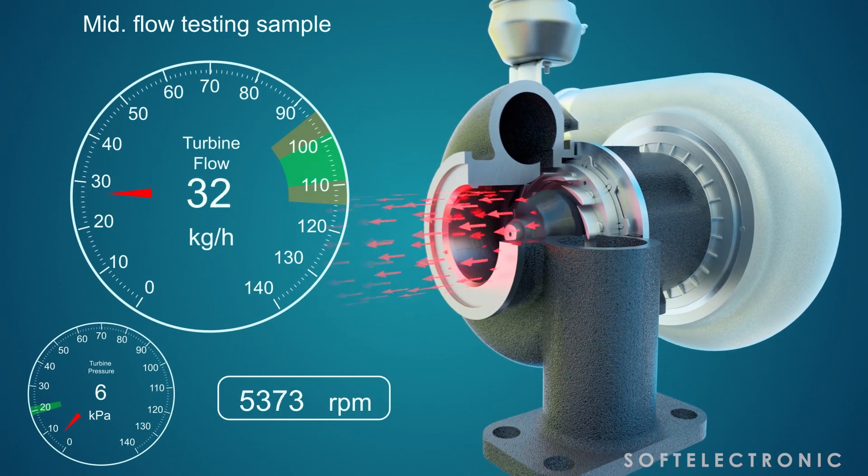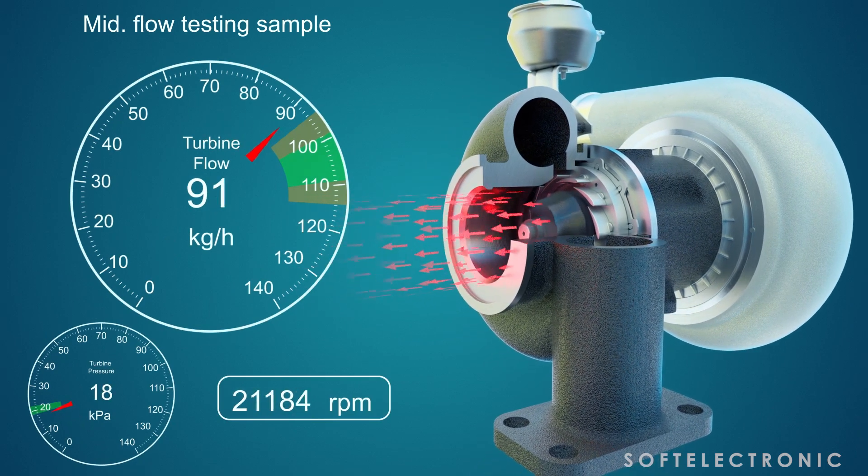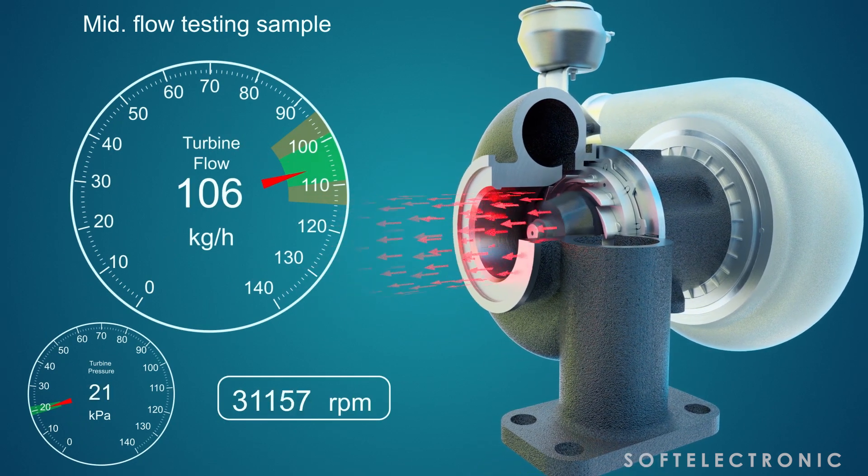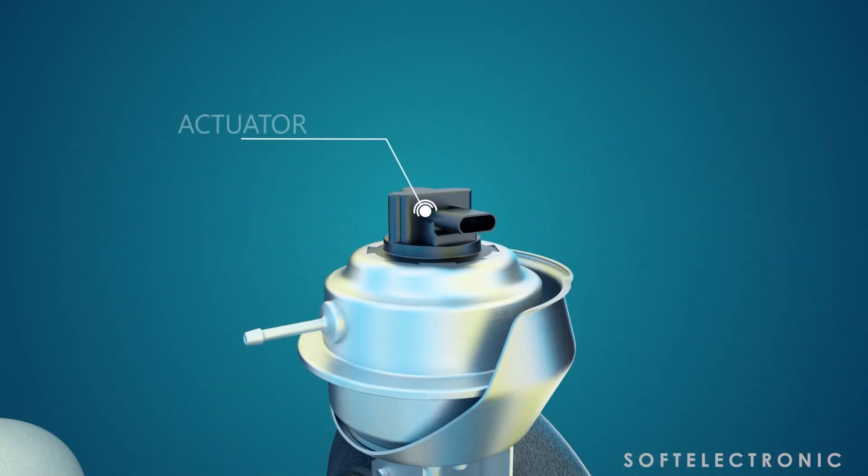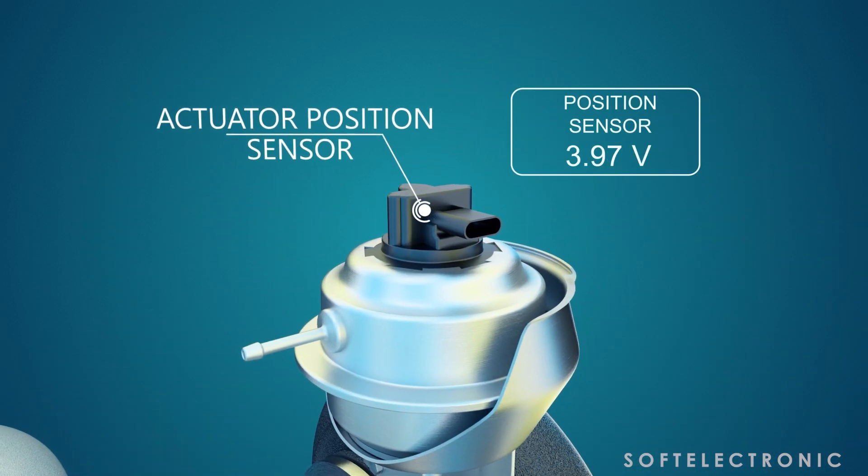The test measures the amount of air mass flowing through the turbine wheel per unit time. The operation of the actuator position sensor, if available, is also checked.